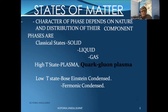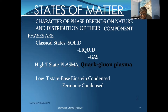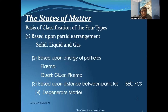The topic is the states of matter. We all are aware that the character of a phase depends on the nature and distribution of its components. On that basis, we can classify states of matter into three groups: the classical state — solid, liquid, and gas; the high-temperature state — plasma and quark-gluon plasma; and the low-temperature state — Bose-Einstein condensate and fermionic condensate. We will look at all six states in greater detail in this session.